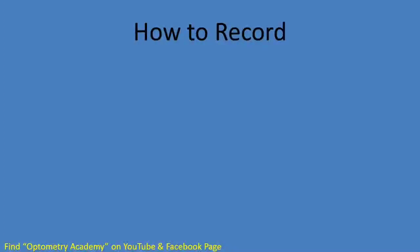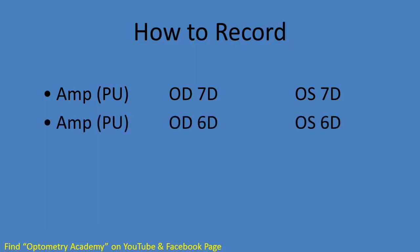Record the method of testing used. Record the amplitude of accommodation in the left eye in diopters. Separately record the results for the right eye and left eye. The amplitude of accommodation of the two eyes should be within one diopter of each other.